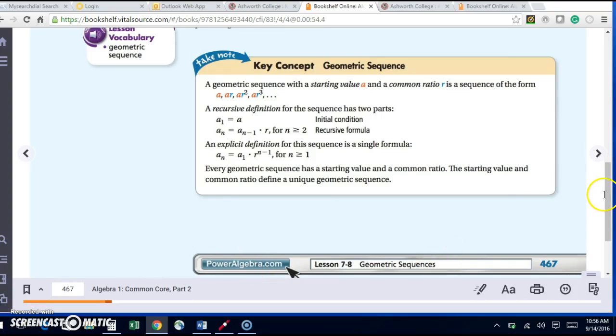Alright, so we're looking at Lesson 7-8, Geometric Sequences. A geometric sequence with a starting value A and a common ratio R is a sequence of the form A, A times R, A times R squared, and A times R to the third.